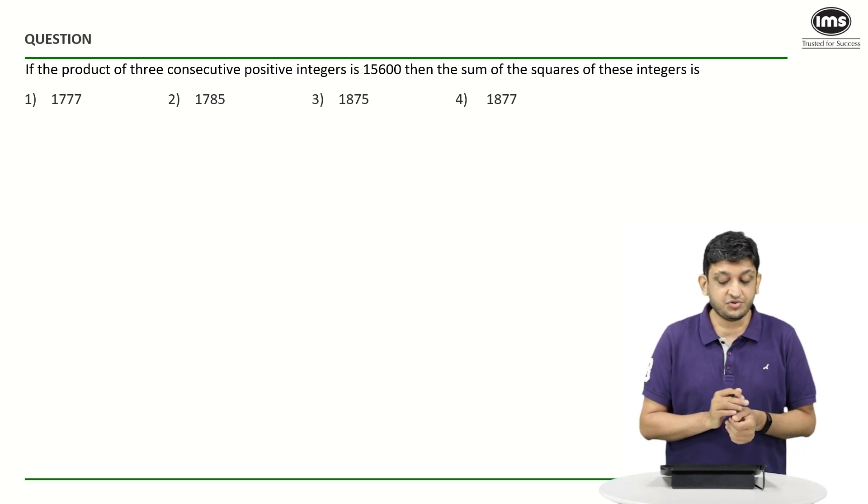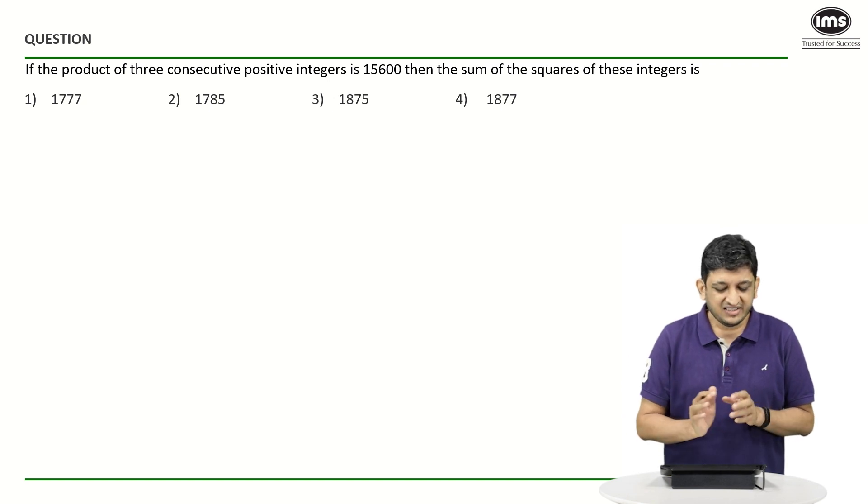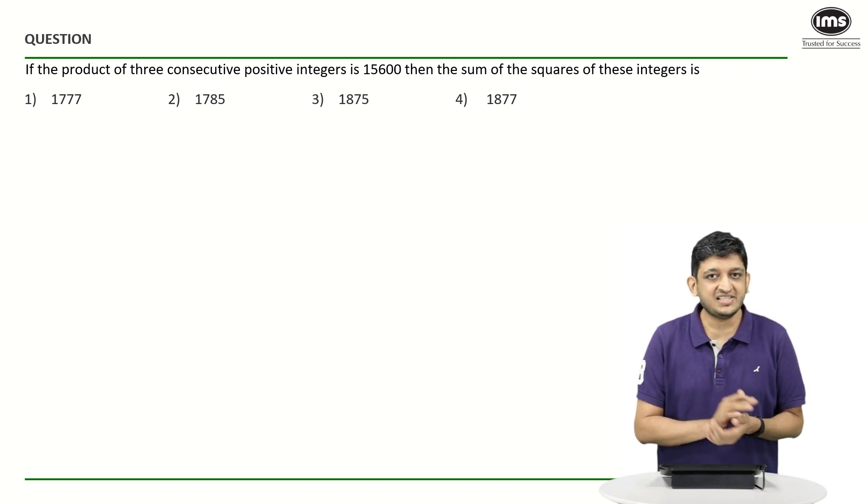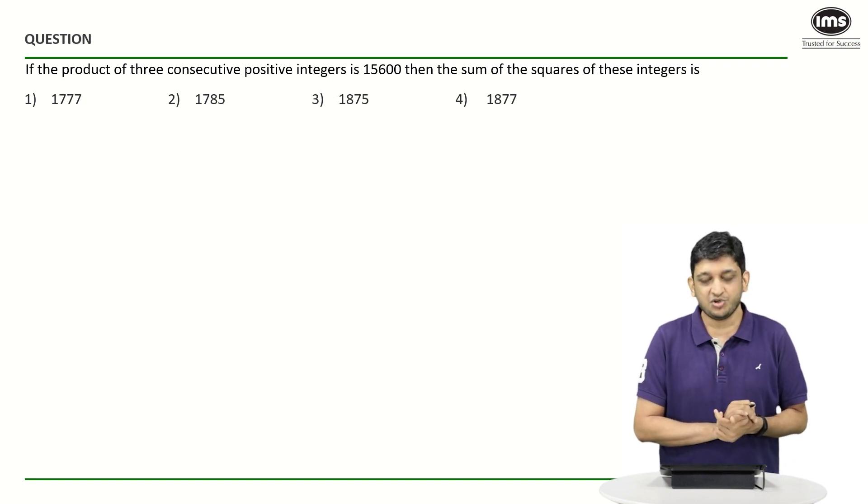The product of three consecutive positive integers is 15600. You have to find what is going to be the sum of the squares of these integers. Now the values are all pretty large in the options and they are not exactly very good looking values, so you are in for a nice calculation.